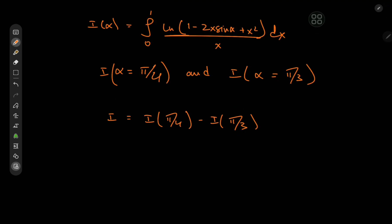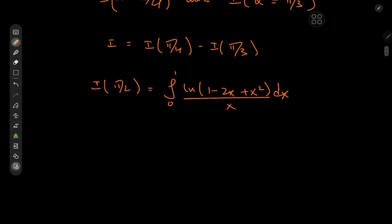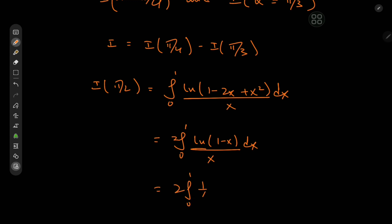We can also use an initial value for the integral function, say α equal to π/2. That gives us the integral from 0 to 1 of log(1 minus 2x times sine(π/2) plus x squared) divided by x, dx. Since sine(π/2) is 1, the argument of the logarithm is just (1 minus x) squared. So we write this as the integral from 0 to 1 of 2 times log(1 minus x) divided by x, dx. We expand log(1 minus x) as an infinite series: the sum over k from 1 to infinity of x to the k divided by k.